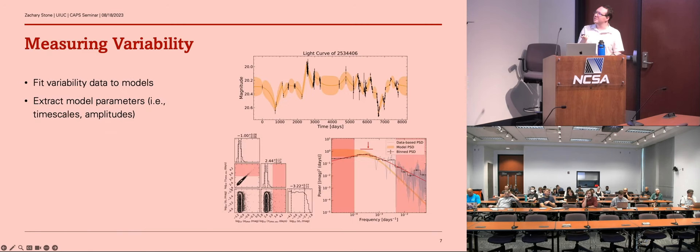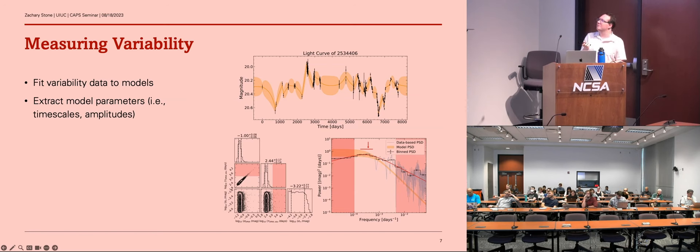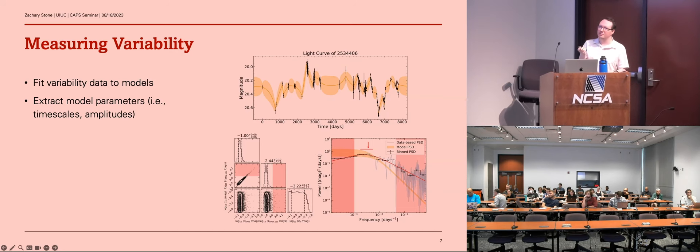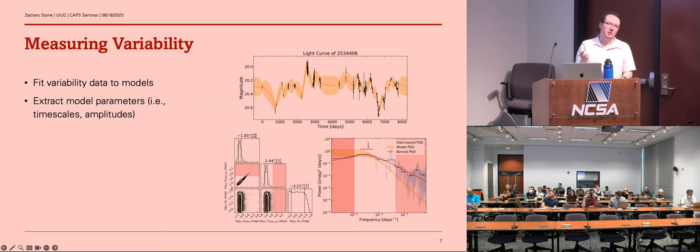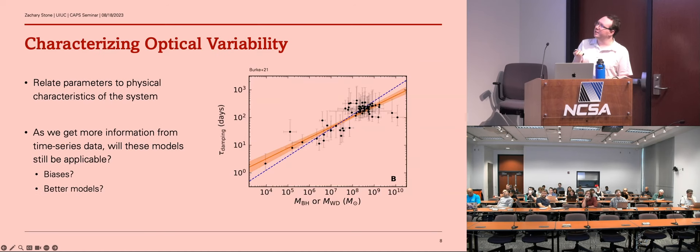So I'll start. So the way in which we do this is we get our time series data, we fit it to some sort of statistical or physically motivated model and extract some parameters, mainly timescale data, but also amplitudes if you're interested. So we really want to know if there's any connection between the timescales of the variability in the optical with timescales in the accretion disk or if there's some sort of physics related to that timescale.